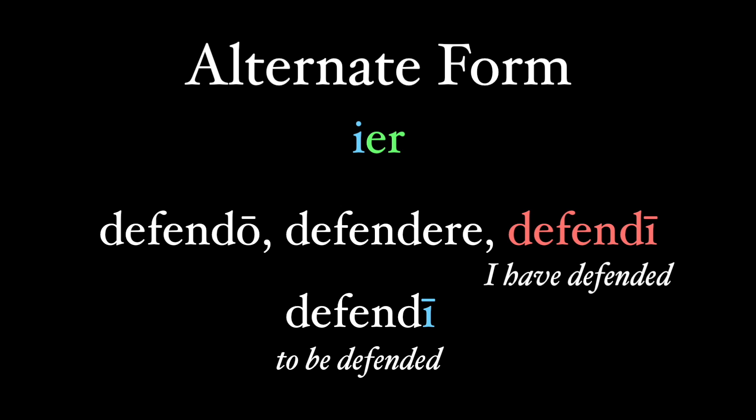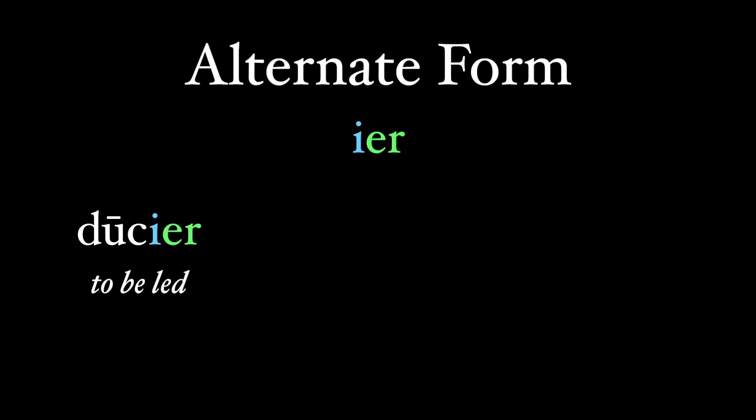Where the passive infinitive dēfendī, to be defended, is identical to the perfect active indicative form dēfendī, I have defended. So the form dēfendier was used for to be defended, to clarify meaning. And this -ier ending was generalized to other third conjugation verbs like dūquier, and then to other conjugations.